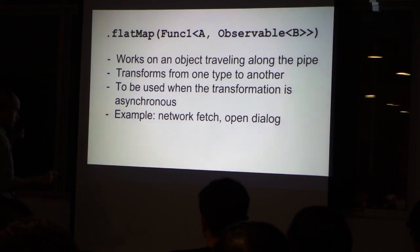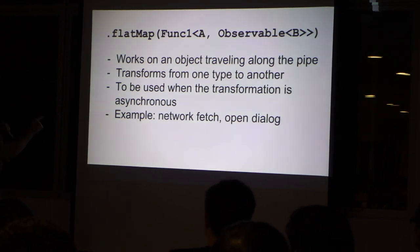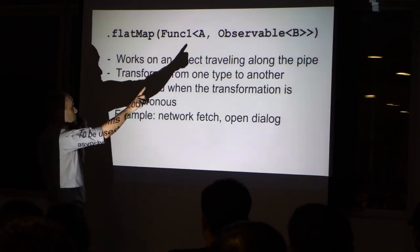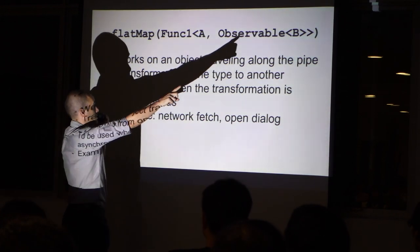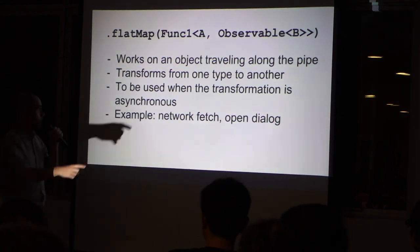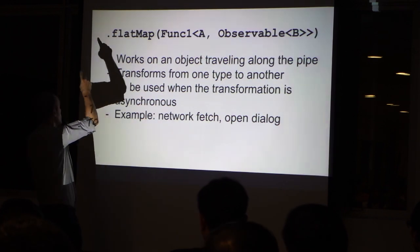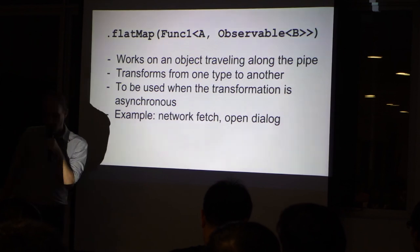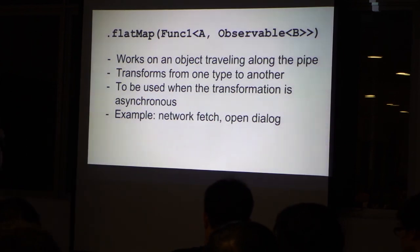So flatMap, this one is a little bit more complex. For map we transform from A to B. Now for flatMap we transform from A to an observable of B. Here it was an observable of A and we transform to an observable of B.